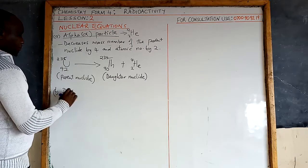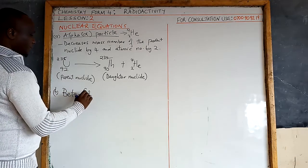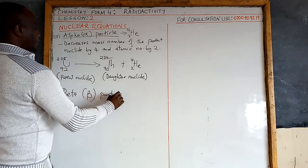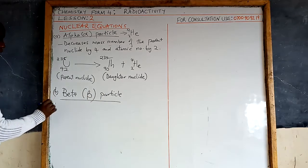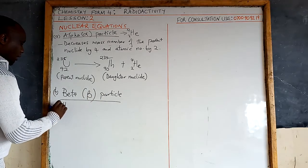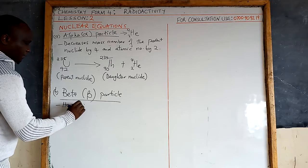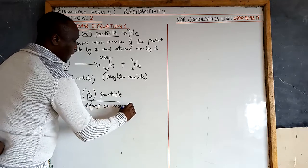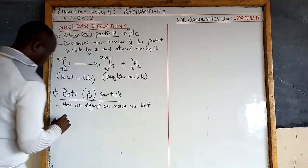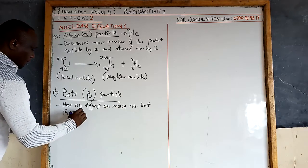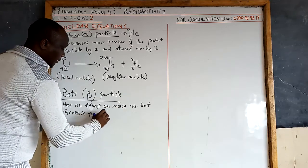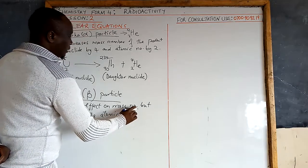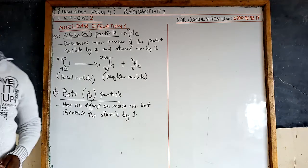The next particle is the beta particle. When a beta particle is emitted, it has no effect on the mass number, but it increases the atomic number — the number of protons — by one.